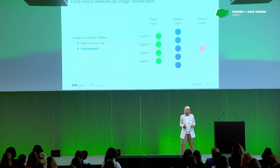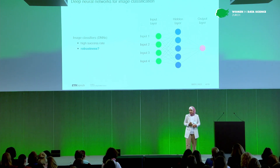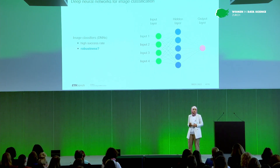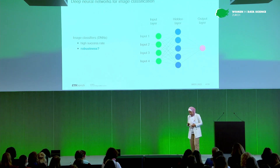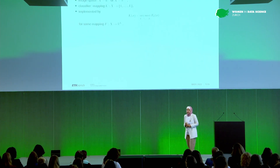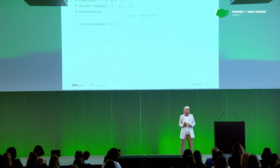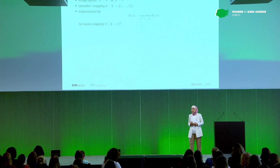So what are adversarial examples in the context of image classification? We heard already today a little bit about image classification, where in the supervised learning setting we have trained an algorithm, and now we want to feed it with unseen images, and it should find or classify objects correctly in that image. There are really state-of-the-art deep neural networks for image classification because of their high success rate — they beat everything else. That's why they are so popular, but the robustness question is not so clear. This is what we talk about when we talk about adversarial attacks. This vulnerability of image classifiers of deep neural networks with respect to these attacks was actually discovered almost a decade ago.